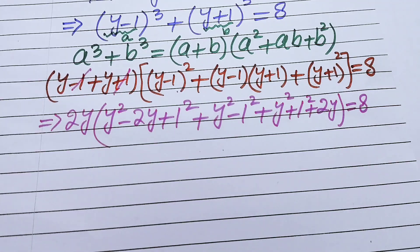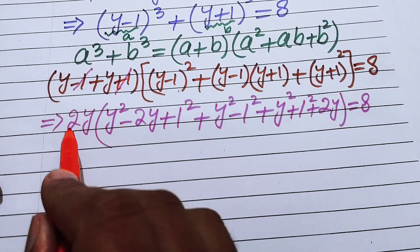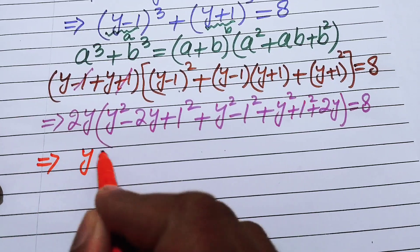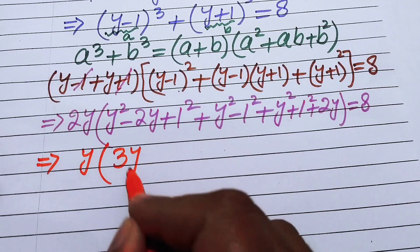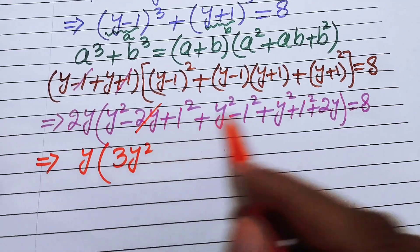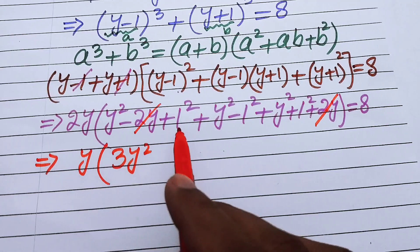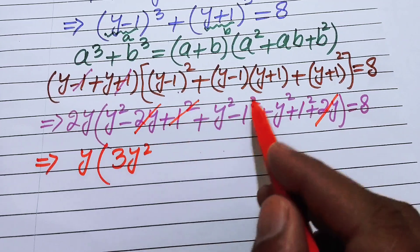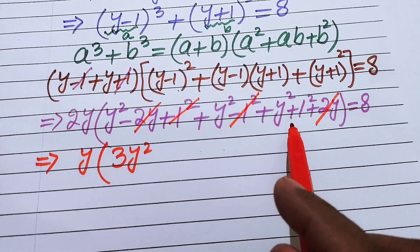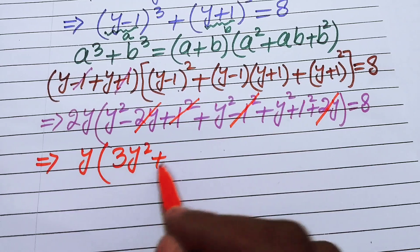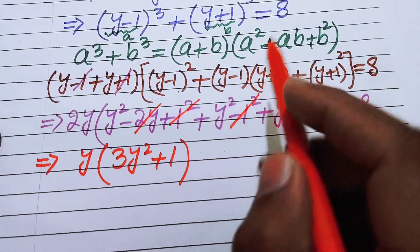We combine like terms inside the bracket: y²+y²+y² = 3y², the −2y and +2y cancel, and 1−1+1 = 1. However, there is a correction needed here — the correct cubic sum formula has a minus sign: a³+b³ = (a+b)(a²−ab+b²), so the middle term is −ab.